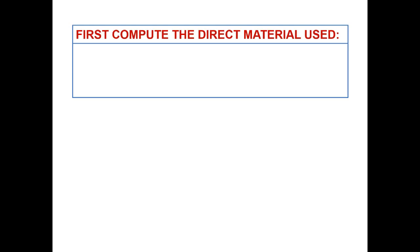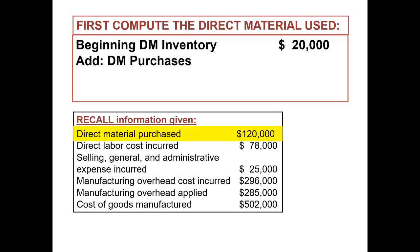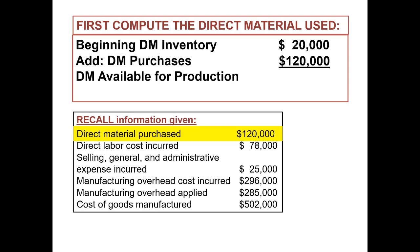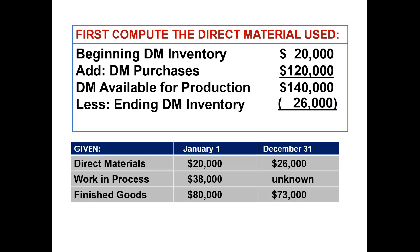First, we'll need to compute the direct material used. We'll take beginning direct material inventory of $20,000, add direct material purchases of $120,000, which gives us direct material available for production of $140,000. Less ending direct material inventory of $26,000, giving us direct material used in production of $114,000.